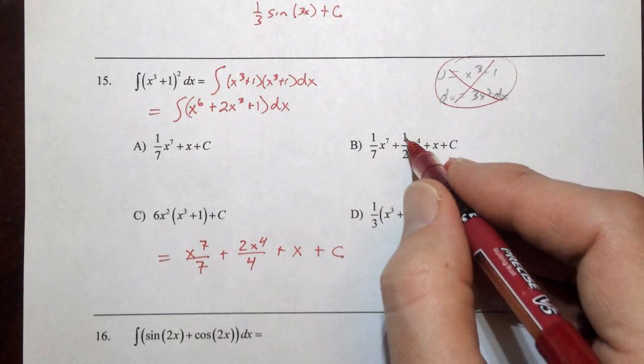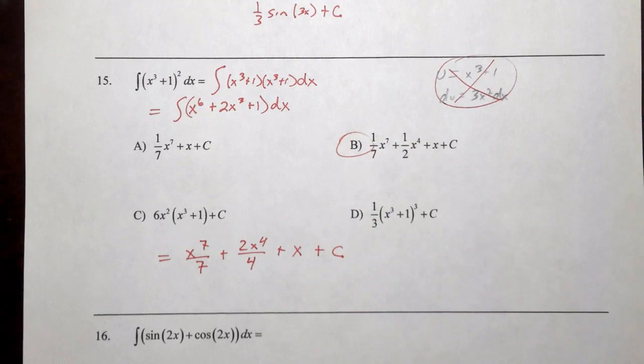and I can see that this is going to match with B. They did a little simplifying here, 2 over 4 down to 1 half, but it matches with B.